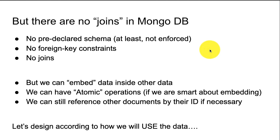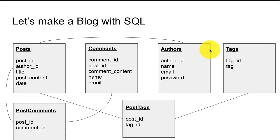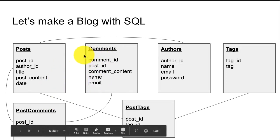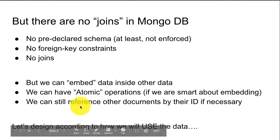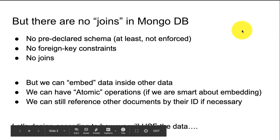For example, if you need to enforce that the comments and the posts need to be updated together in an atomic way, you can embed the comments inside the posts. You don't have to have joins or any linking. You just put the comments directly inside the posts and it's automatically an atomic transaction. And we can still reference other documents by their ID — we'll see that example shortly.